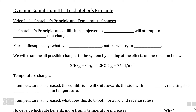In this series of videos, we're going to focus on Le Châtelier's Principle, which is arguably the most important single concept in the dynamic equilibrium unit. Le Châtelier's Principle states that whenever an equilibrium is subjected to a stimulus, which is any change that comes from outside of the reaction itself, the fact that it is in equilibrium will attempt to reverse whatever that change is.